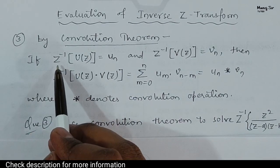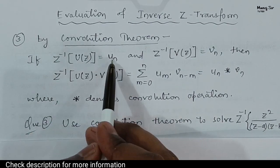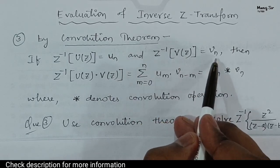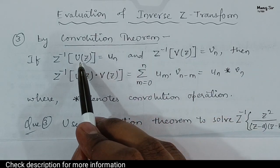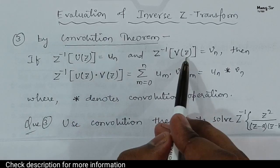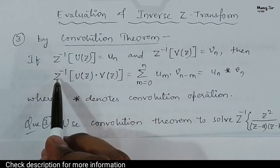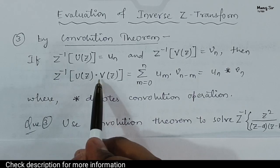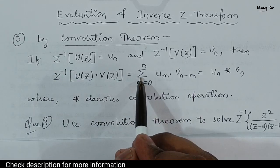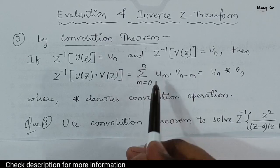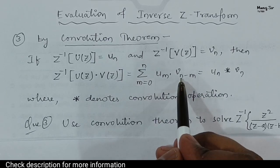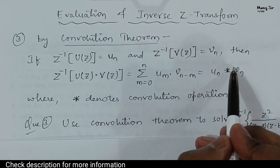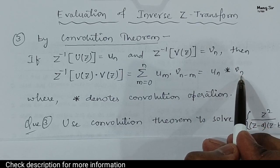If the inverse Z transform of U(Z) equals U(n), and the inverse Z transform of V(Z) is V(n), then the inverse Z transform of the product U(Z) · V(Z) is equal to the summation from m equals 0 to n of U(m) · V(n−m), and that is equal to U(n) convolved with V(n).